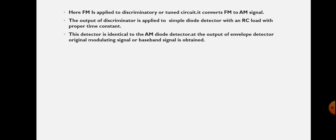The FM signal is applied to the discriminator or tuned circuit, which converts FM to AM. The output of the discriminator is applied to a simple diode detector with an RC load with a proper time constant. This detector is identical to the AM diode detector. At the output of the envelope detector, the original modulated or baseband signal is obtained. In the FM detection process, we convert the FM signal to AM and then detect the AM signal to recover the original modulating signal. In the next video, we will see the indirect method of FM demodulation — PLL demodulation. Thank you.